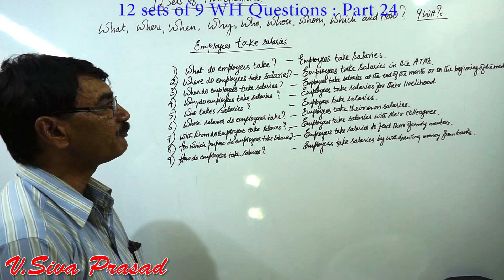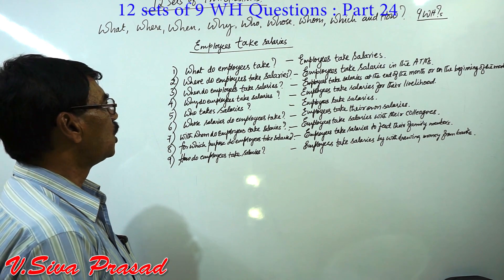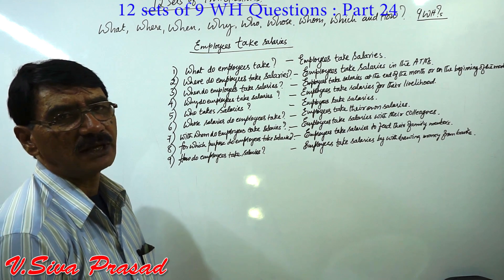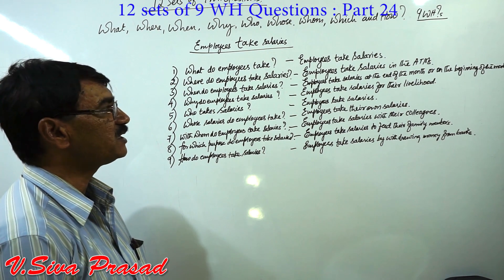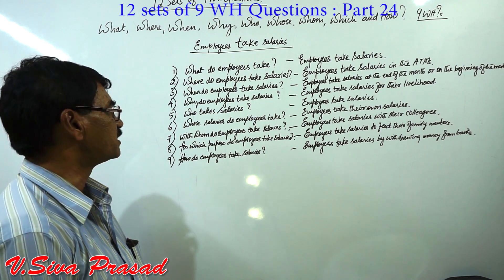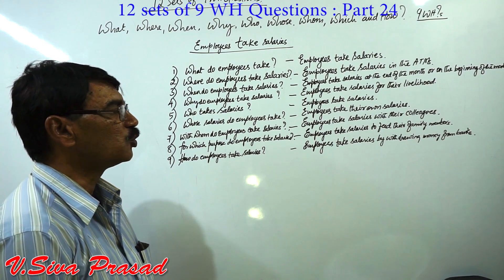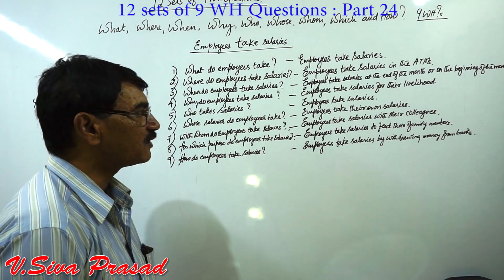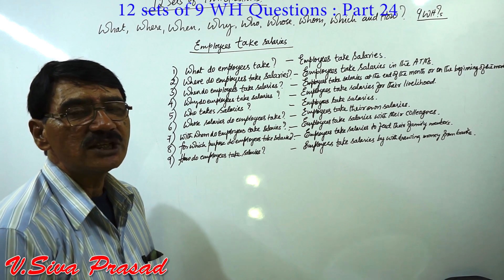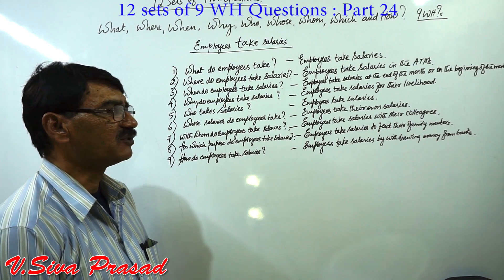Set 2 — Simple Past: What did employees take? Employees took salaries. Where did employees take salaries? Employees took salaries in the ATMs. When did employees take salaries? Employees took salaries at the end of the month or at the beginning of the month. Why did employees take salaries? Employees took salaries for their livelihood. Who took salaries? Employees took salaries. Whose salaries did employees take? Employees took their own salaries. With whom did employees take salaries? Employees took salaries with their colleagues. For which purpose did employees take salaries? Employees took salaries to feed their family members. How did employees take salaries? Employees took salaries by withdrawing money from banks.